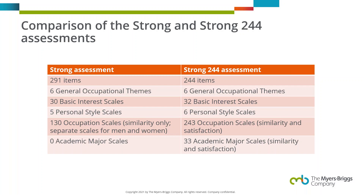In a side-by-side comparison of the current Strong 291 and the Strong 244 assessment: items are 291 versus 244. Both assessments have six general occupation themes — the Holland RIASEC measures. The Strong 244 adds two new basic interest scales, going from 30 to 32, adds one additional personal style scale, and the biggest differences are the dramatic increase in occupation scales from 130 to 243, and the new academic major scales.